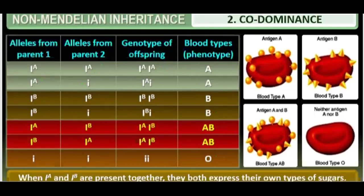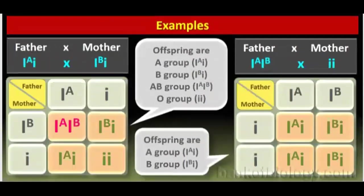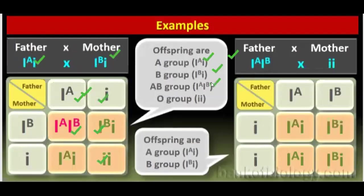Let us go to some practical examples to make co-dominance more clear. Father's blood group is A and mother's blood group is B, but both have heterozygous alleles. Heterozygous alleles means they can create A blood group, B blood group, and O blood group. The first offspring has blood group A, second has B, third has AB, and fourth has O blood group.